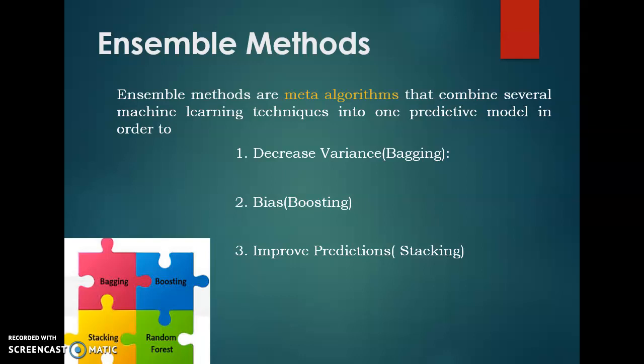Ensemble methods are basically divided into two groups: sequential ensemble methods and parallel ensemble methods. In sequential ensemble methods, the base learners are generated sequentially. The basic motivation of sequential methods is to exploit the dependence between the base learners, so that the base learners could have dependency on each other. The overall performance can be boosted by weighing previously mislabeled examples with a higher weight.